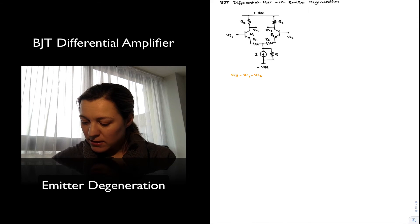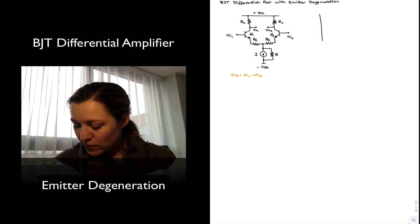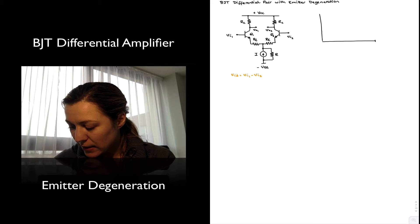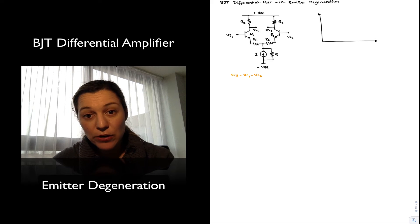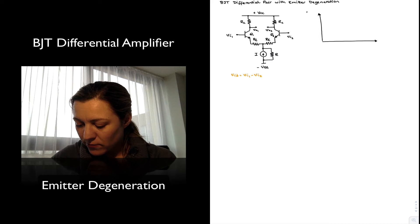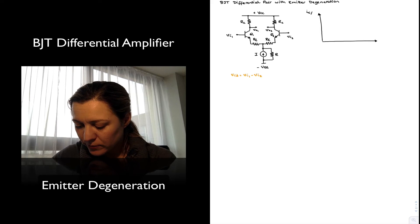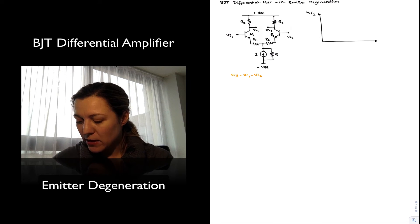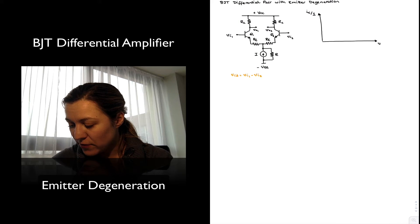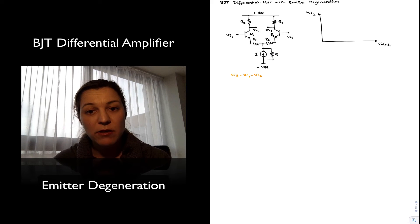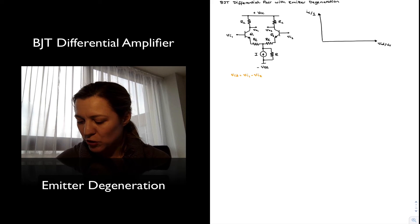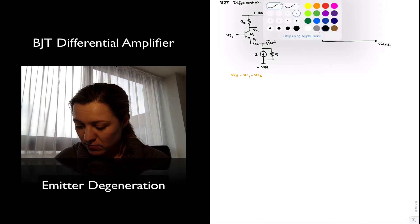We have seen that the DC transfer characteristic for a differential pair looks something like this. We created normalized curves where the output is the collector current normalized by the tail current, IC divided by I, and on the x-axis we have the differential input voltage normalized by the thermal voltage, which is around 25 millivolts at room temperature.